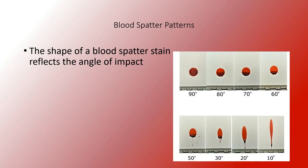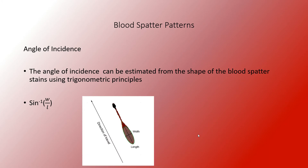What does that tell us? It gives us what we call angle of incident. Basically, based on the shape of that blood droplet, you can determine where it would have come from and at what angle it would have contacted the surface — whether it be on a floor, on a wall, a door, or any surface it comes in contact with. It does become more difficult on certain surfaces, whether it's really absorbent surfaces such as carpet or porous surfaces.